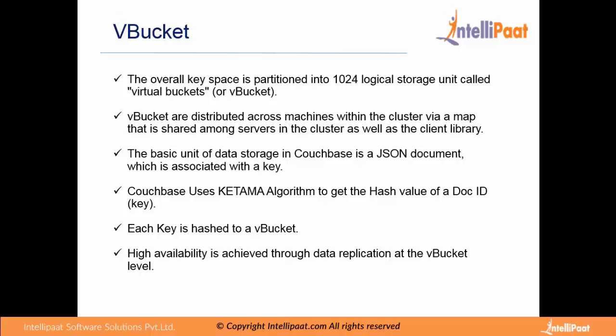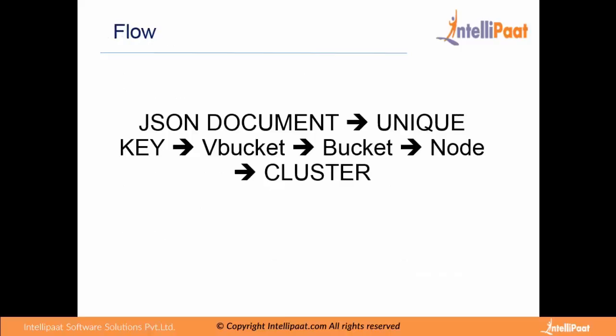High availability is achieved through data replication at the VBucket level. For example, if we have a replication factor of 2, we will have a total of 2048 VBuckets. To combine all these terms: data lives in JSON documents, each document is assigned a unique key, that key falls into a VBucket, the VBucket is part of a particular bucket, a node contains a number of VBuckets, and multiple nodes combine to form the cluster.